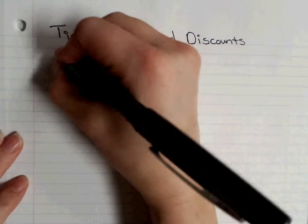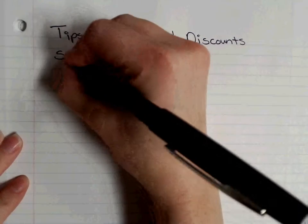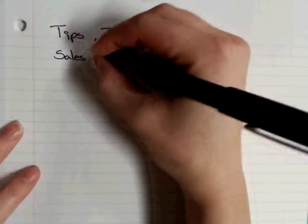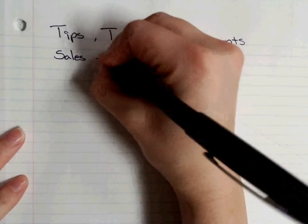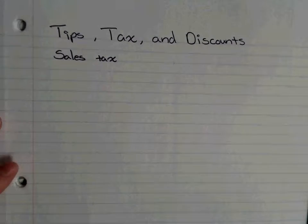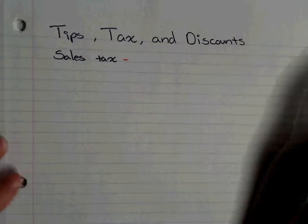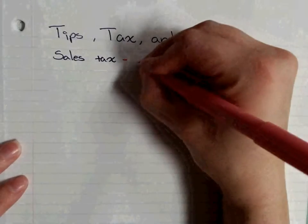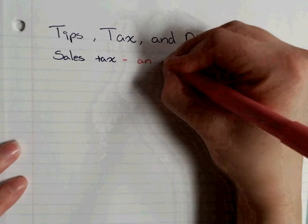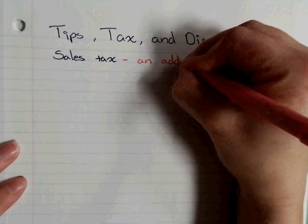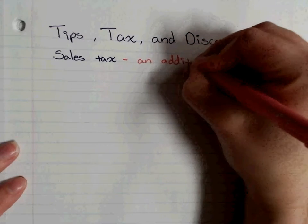Discounts — you already know that as a sale or clearance: it's a reduction of the price. Markup we already talked about. These are very valid things you'll be dealing with for the rest of your life — you pay tax, you go out to eat — so make sure you understand this information.